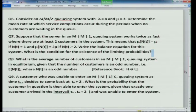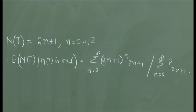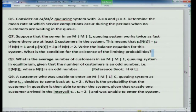Exercise 8: What is the average number of customers in an MM1 queuing system in equilibrium, given that the number of customers is an odd number? Compute E[n_t | n_t is odd], which equals the summation of (2n+1) times P(2n+1) for n from 0 to infinity, divided by the summation of P(2n+1) for n from 0 to infinity.